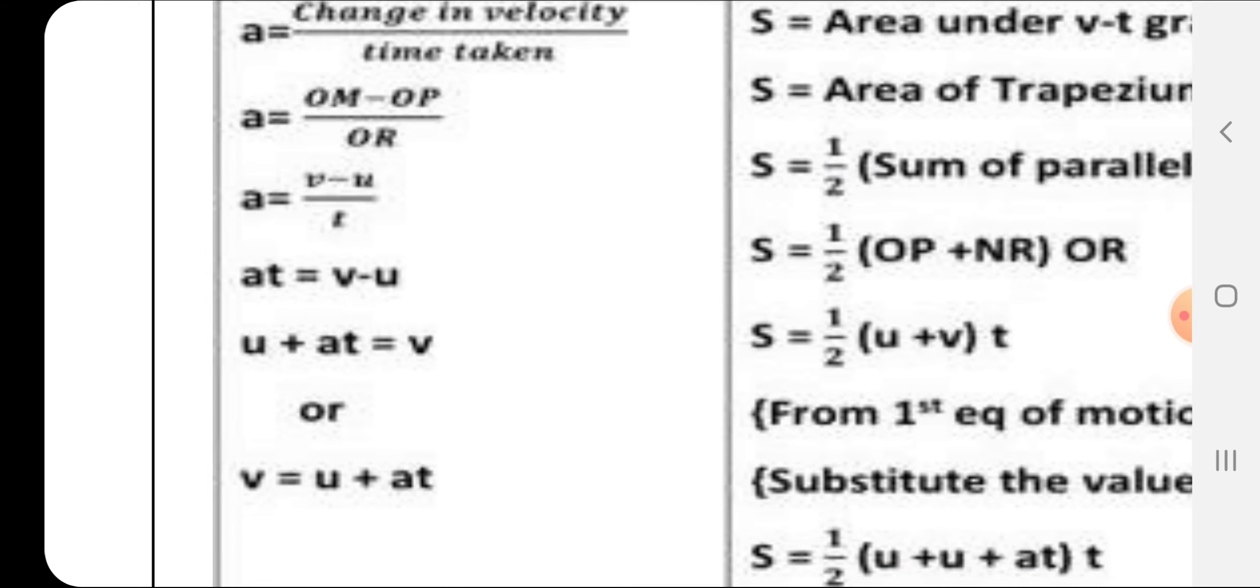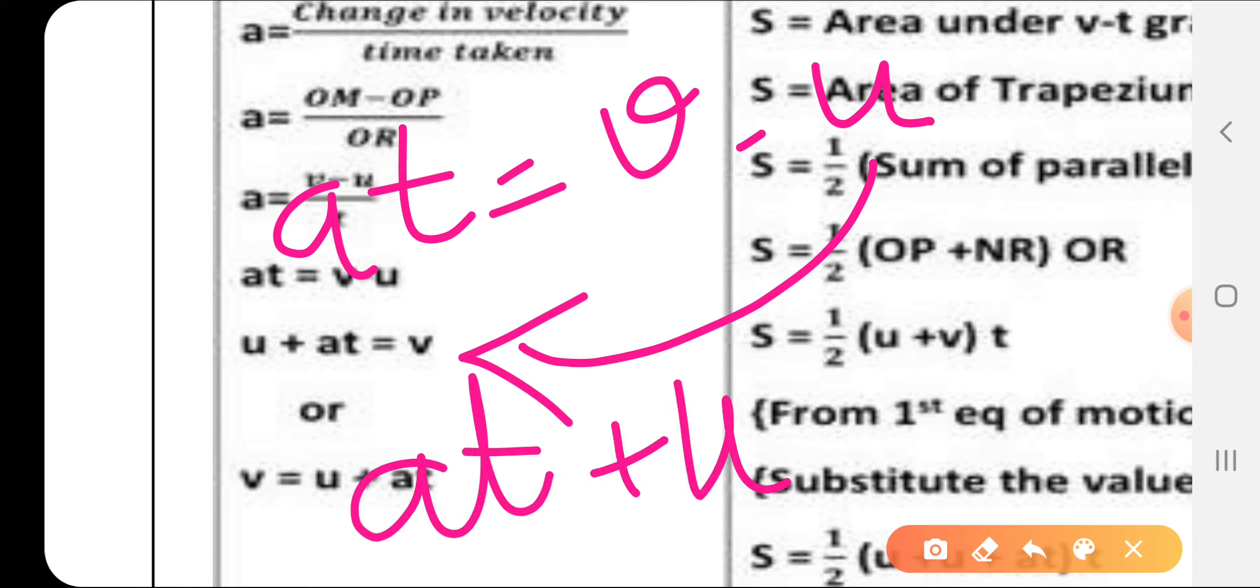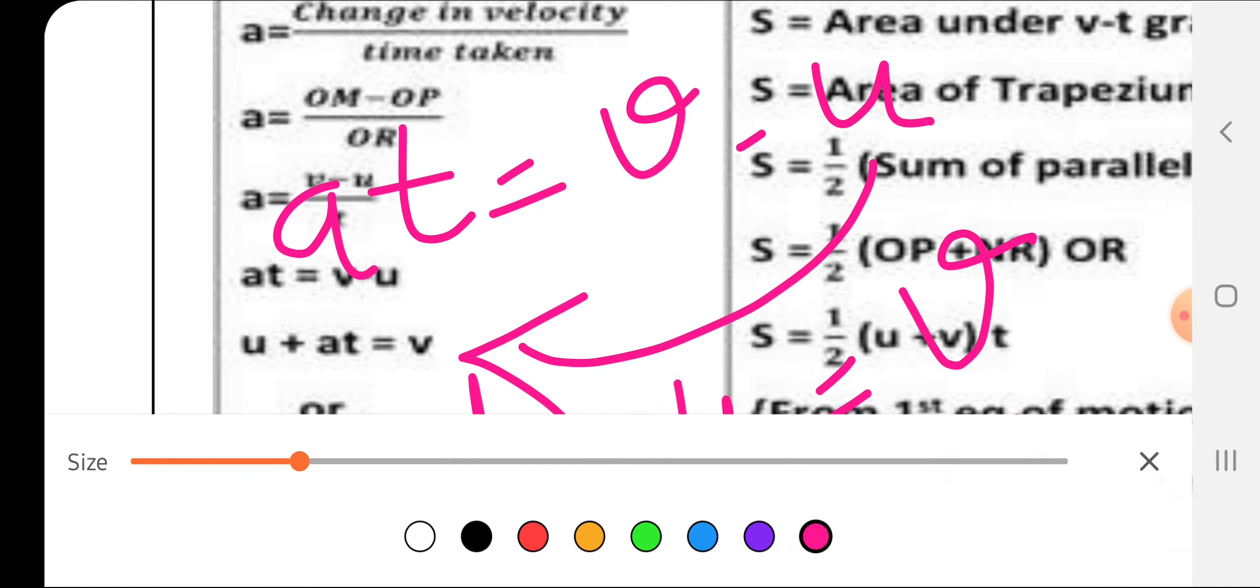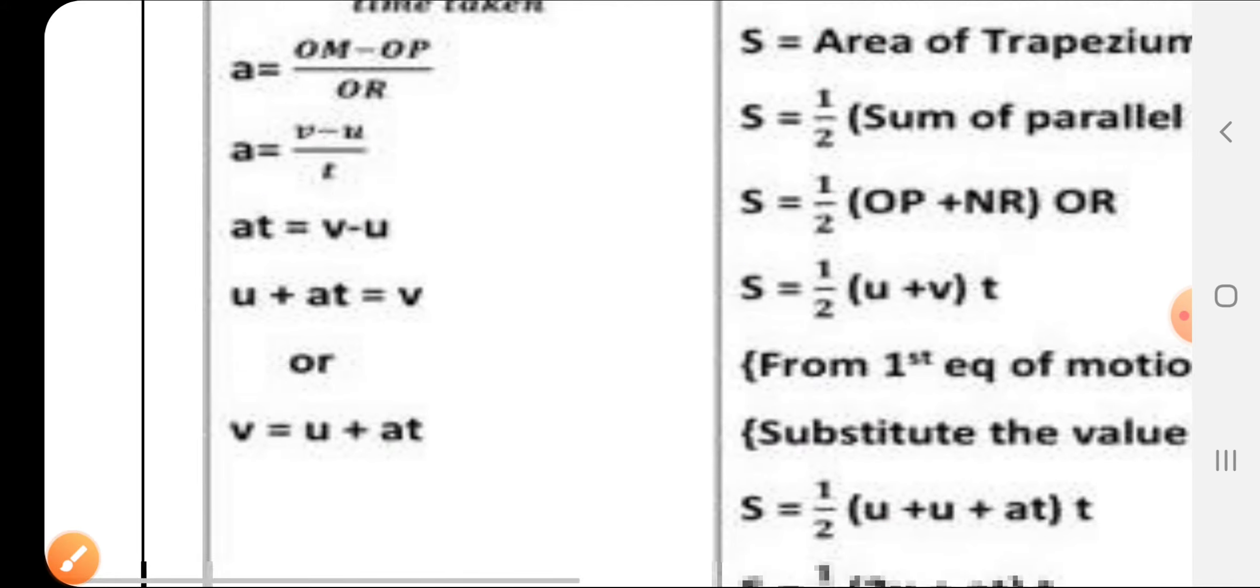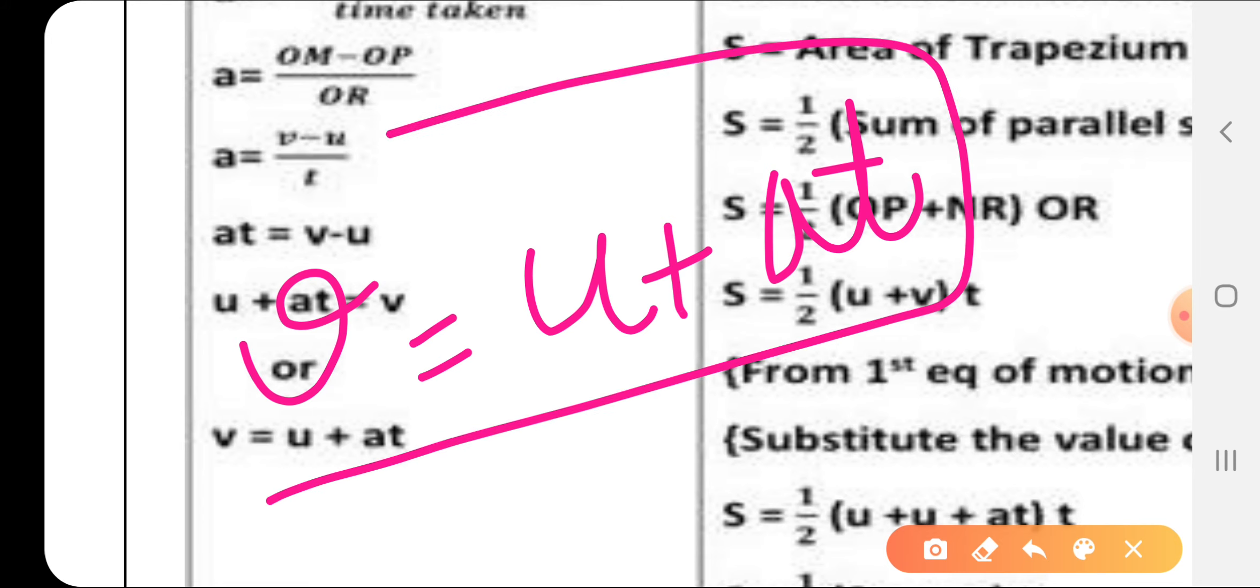Now I bring t to this side, so that will become at = v - u. If I want to make the same equation form, I will bring u to this side. It will become at + u = v, or v = u + at.